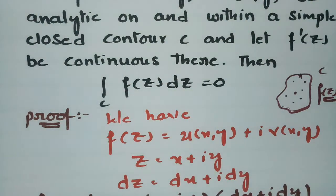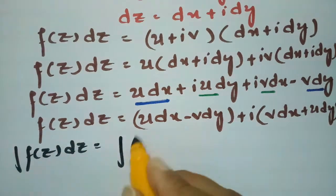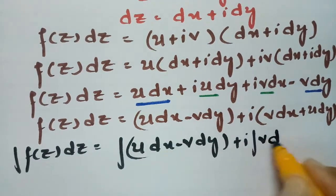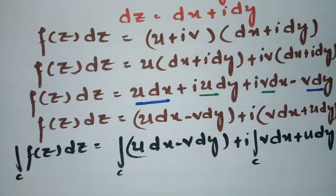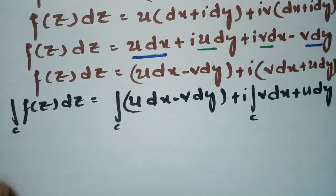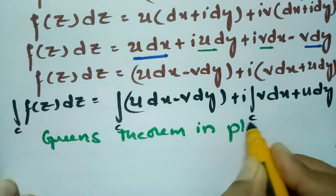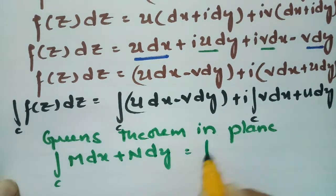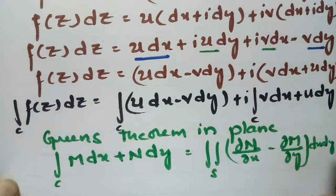Now we take the integral. The line integral of f(z) dz along C equals the integral of (u·dx − v·dy) plus i times the integral of (v·dx + u·dy). We now recall Green's theorem in the plane: the line integral of (M·dx + N·dy) equals the double integral of (∂N/∂x − ∂M/∂y) dx dy.